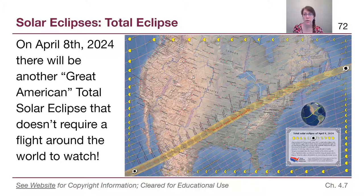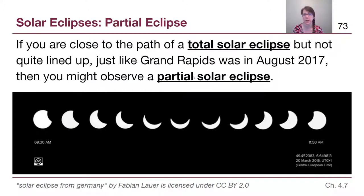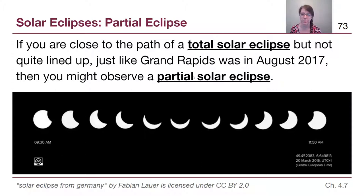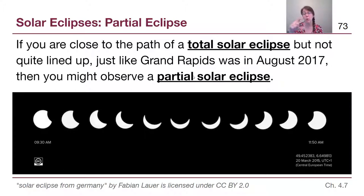For a solar eclipse, these happen at most twice a year during eclipse seasons. When they happen, somewhere on Earth is going to get the path, and hopefully it's a total solar eclipse. But it is possible to see a partial solar eclipse if you're farther away from that path. This set of images shows how a partial solar eclipse works — you never get fully lined up. This example from 2015 shows the most covered-up point in the middle, and even then it isn't fully covered up.